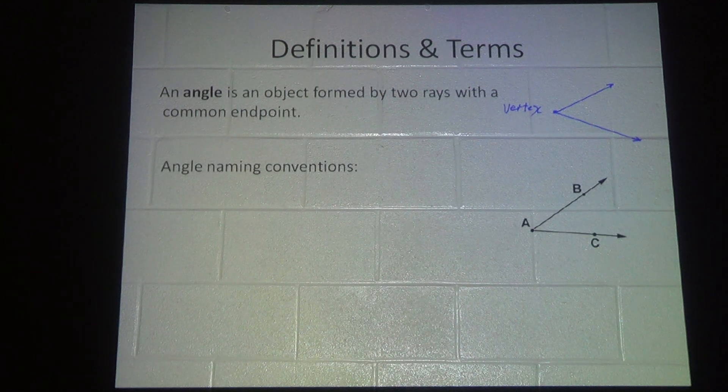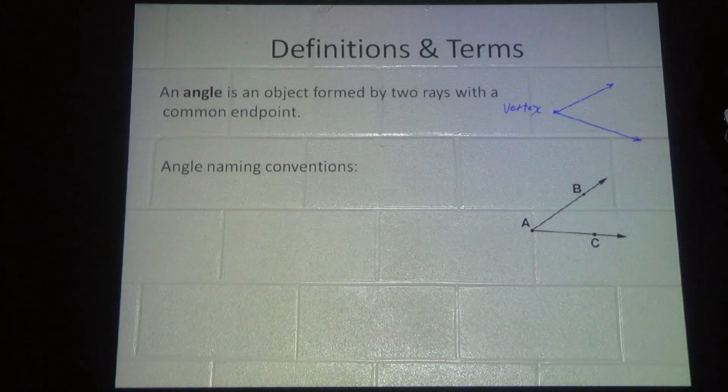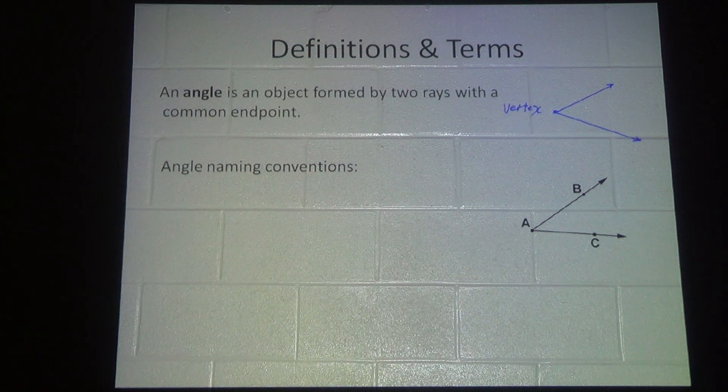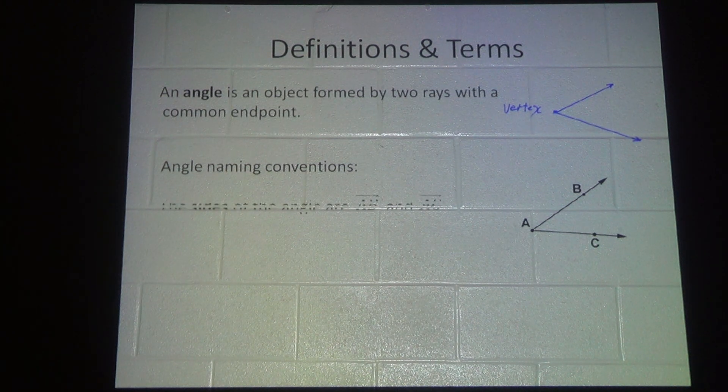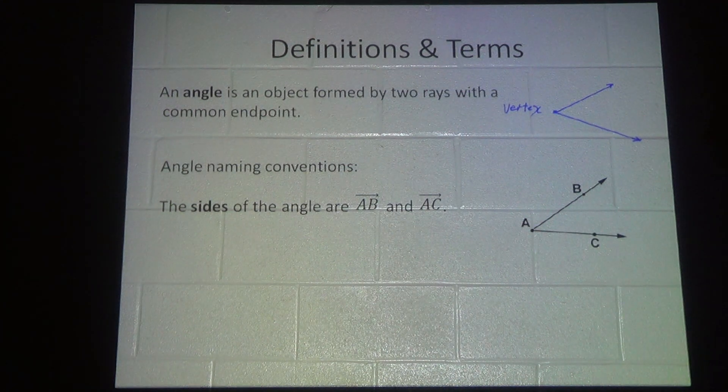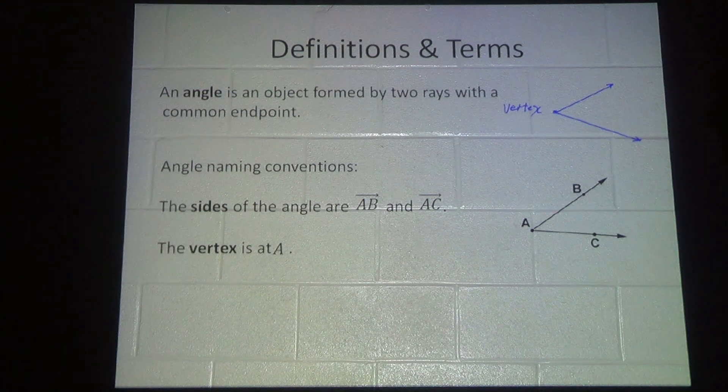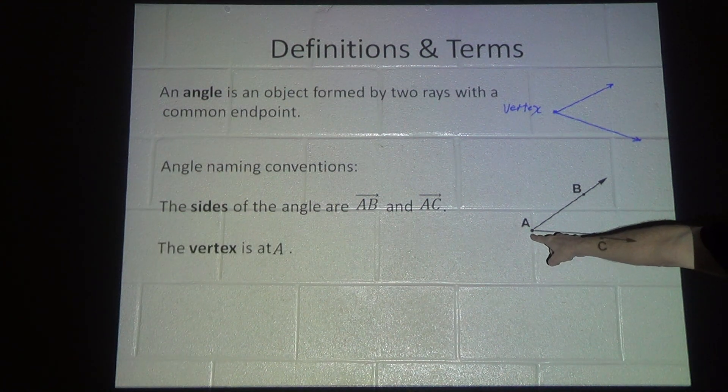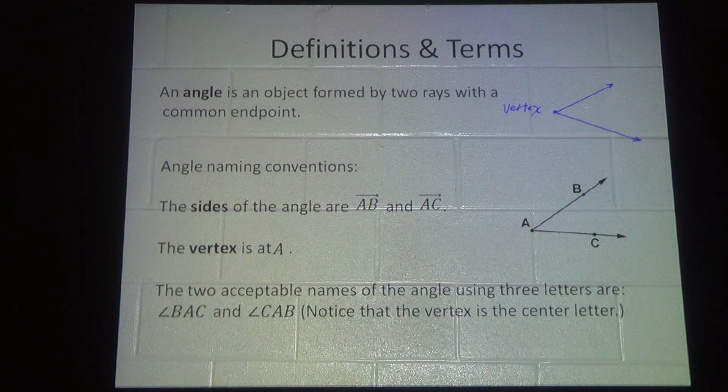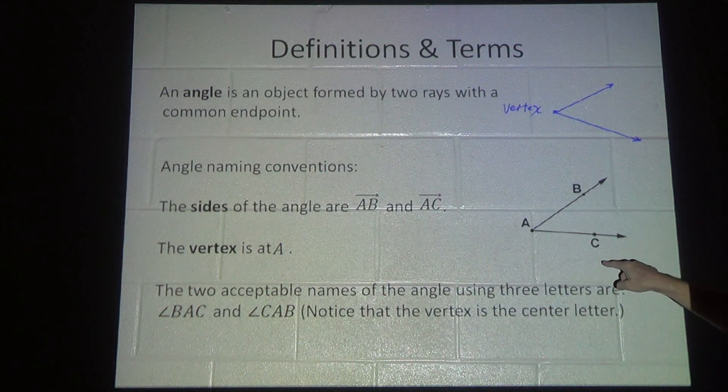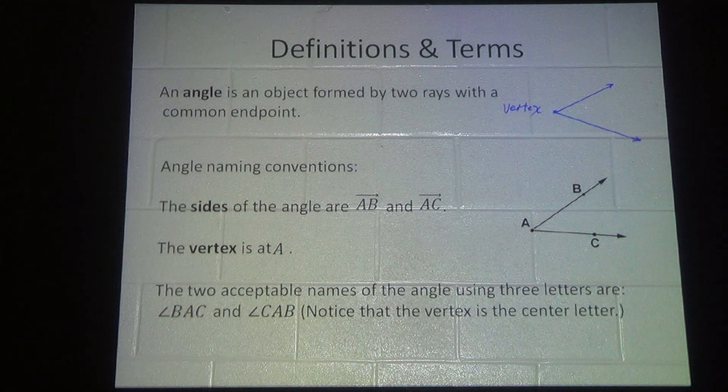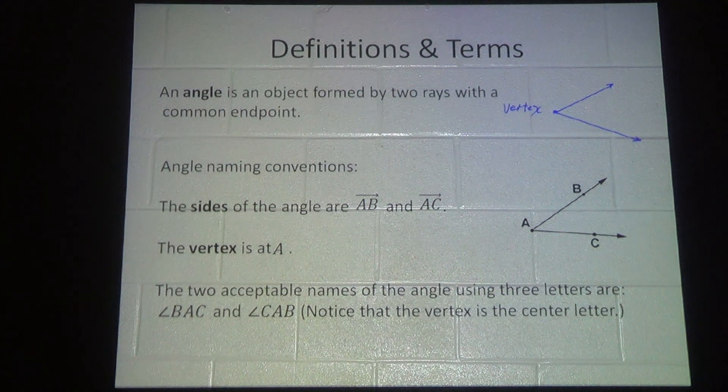These are some angle naming conventions, because when you have an object like this, you have to be able to refer to it. The sides of the angle are ray AB and ray AC. The vertex is at A. The two acceptable names of the angle using three letters are angle BAC or angle CAB. The vertex is always the middle letter whenever you have it named with three letters like this.